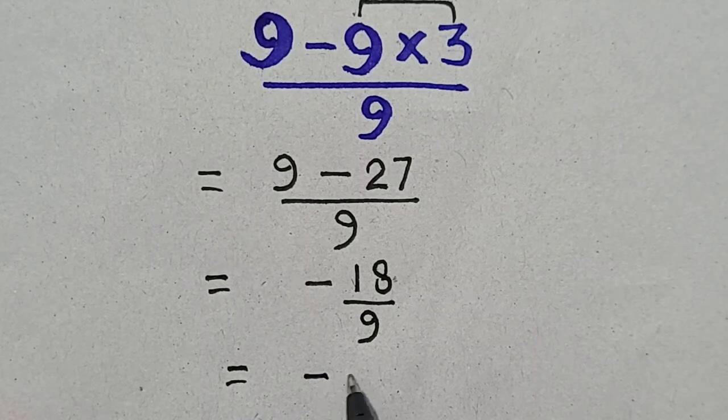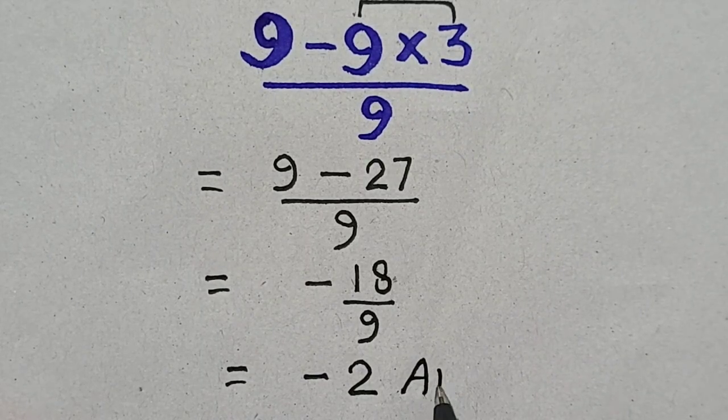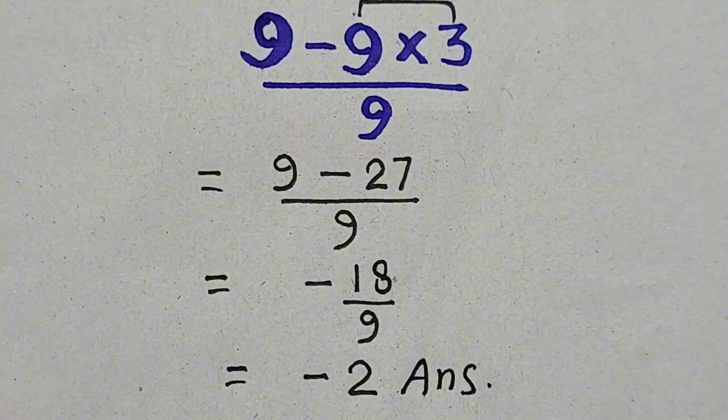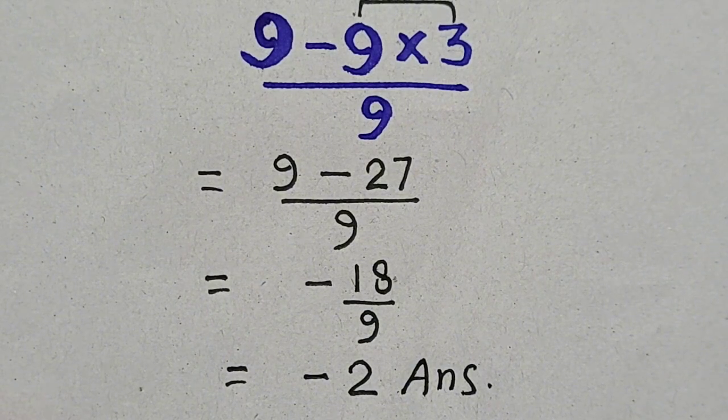So negative 18 divided by 9, we will get negative 2, which will be our answer. Thank you for watching my YouTube video.